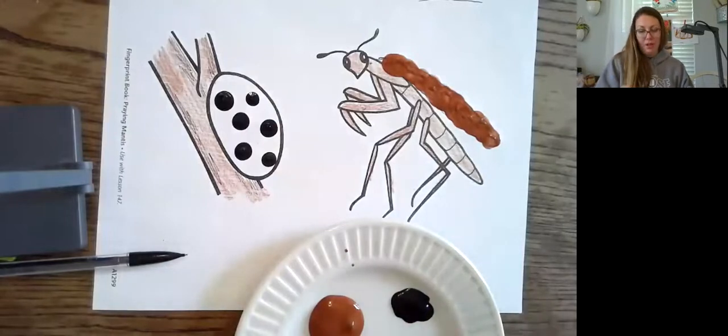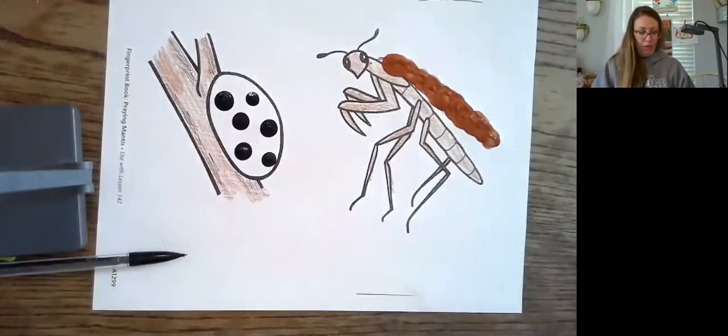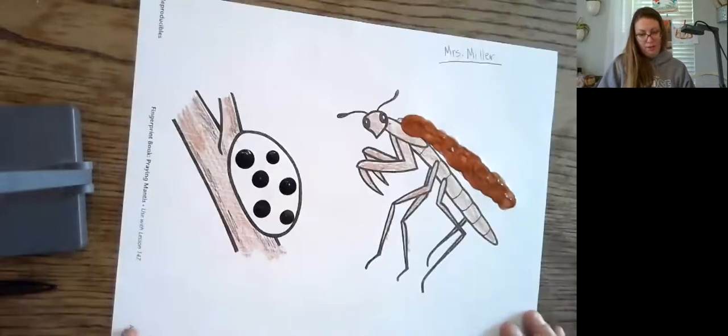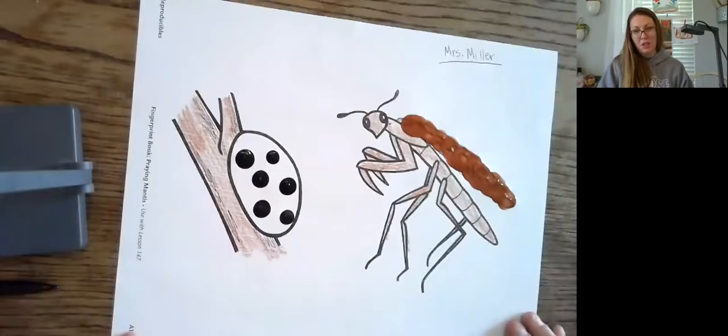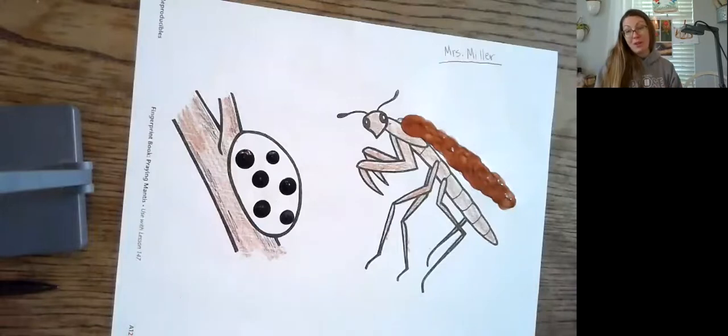All right. So I'm just wiping my fingers off on my napkin. And we are finished with the praying mantis. All right. Again, make sure to keep them. I'm drawing mine and hanging them behind me. Because I want my own book. So I'm keeping up with them.